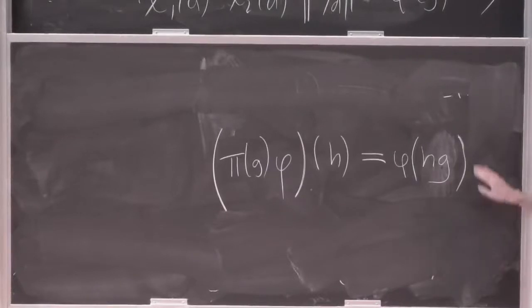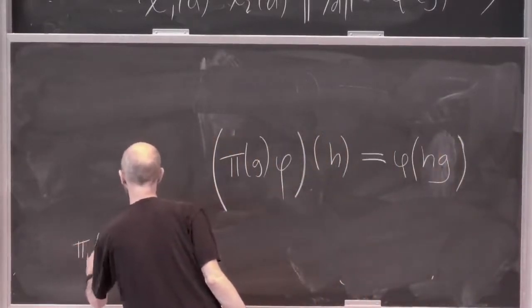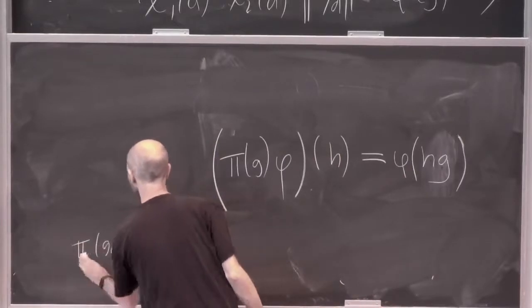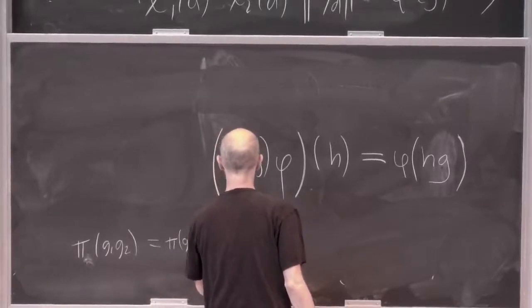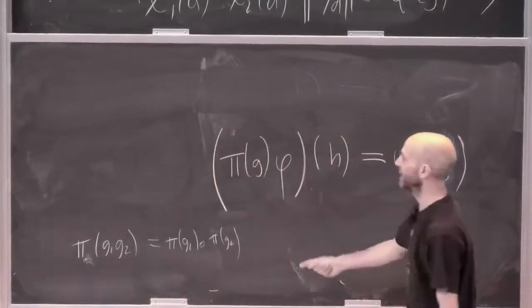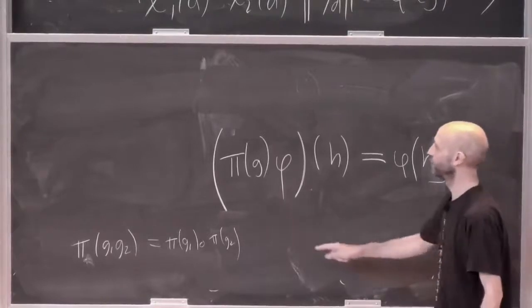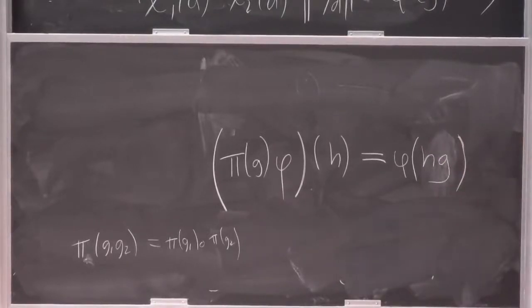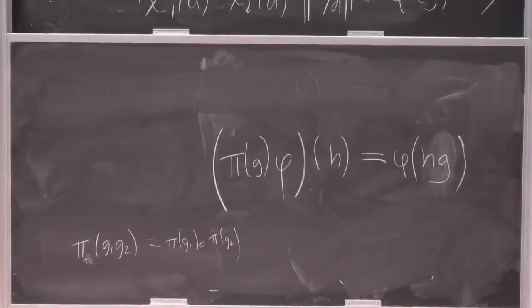So there's the thing I wrote down, and now there's this implicit lemma. How do I check that π(G₁G₂) equals π(G₁) composed with π(G₂)? I've got to check that, because if that's not true then I haven't written down a representation of my group. You know how to do that — that's five lines of algebra — but let me show you how to do it in your head without any lines of algebra at all.